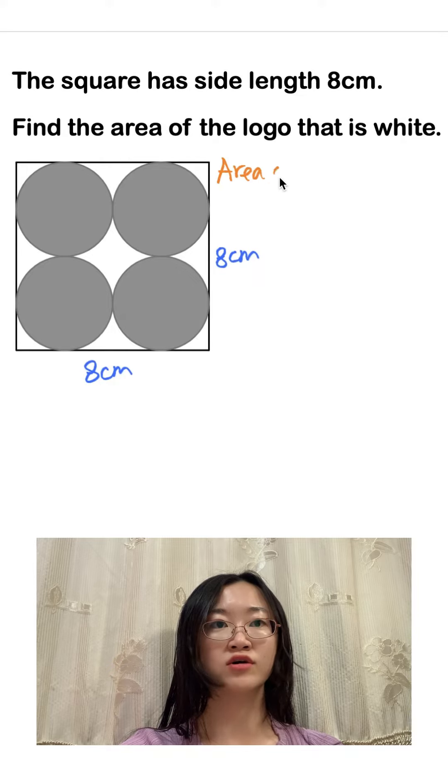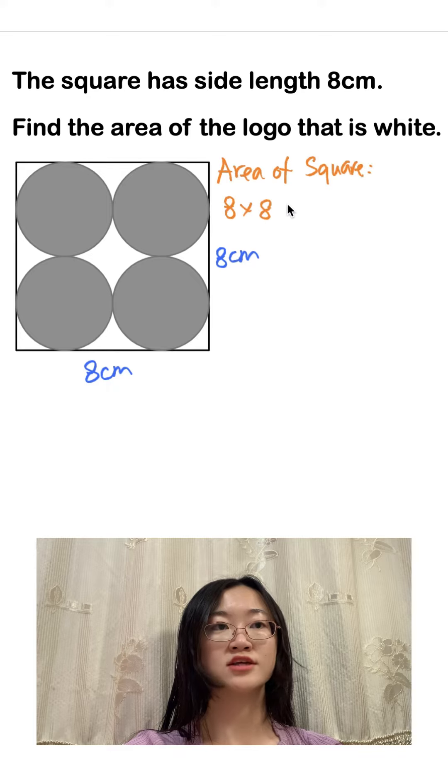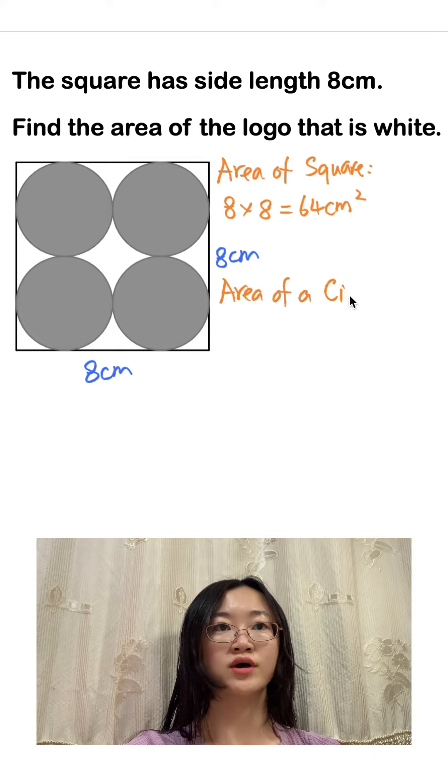To find the area of the square we square the side length of eight centimeters, that is 64 centimeters squared. And the area of a circle is pi r squared.